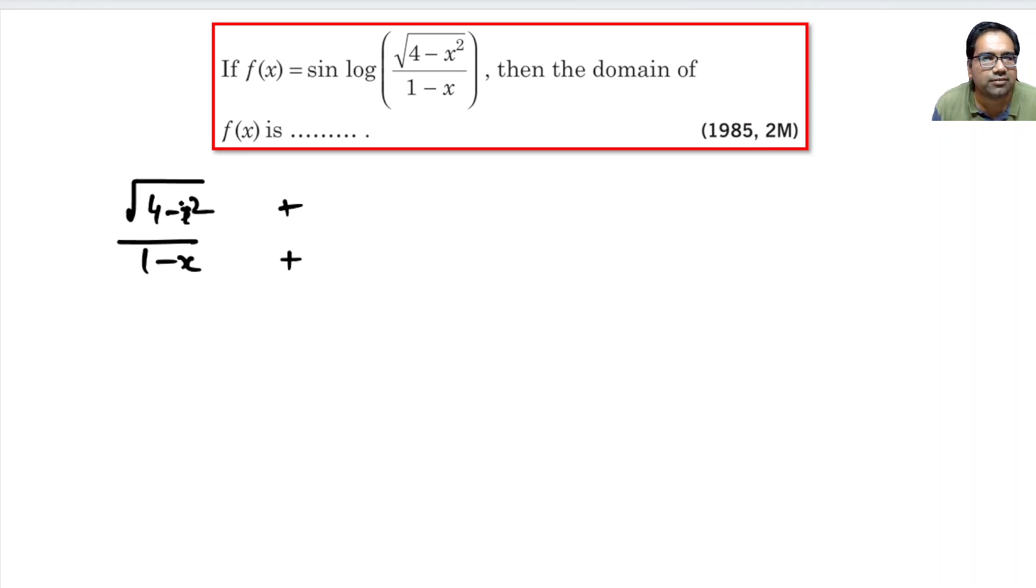If the denominator is negative, then the fraction will be negative, which is not possible. At the same time, 1-x cannot be equal to 0. Now, 4-x² should be greater than 0. Log is defined for greater than 0, so it is not greater than or equal to - it should be strictly greater than 0.